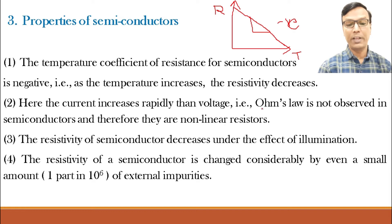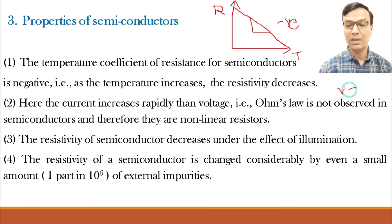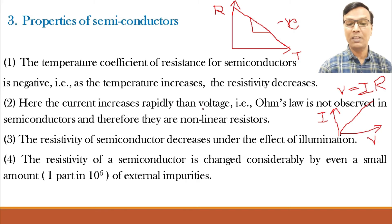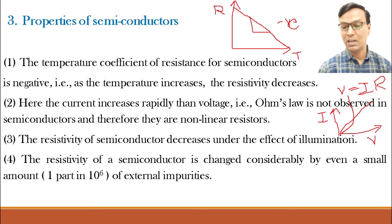The current increases more rapidly than voltage. That is, Ohm's law is not observed in semiconductors and therefore they are non-linear resistors. According to Ohm's law, V is equal to I into R. But for semiconductors, the current increases rapidly compared to voltage and Ohm's law is not observed. The graph shows that current I is increasing rapidly as compared to voltage V. Therefore, they are called non-linear resistors.